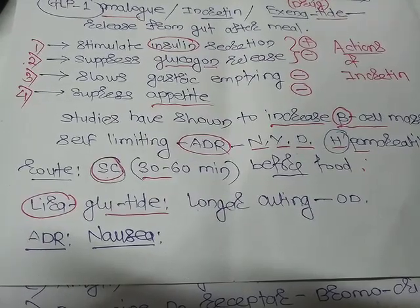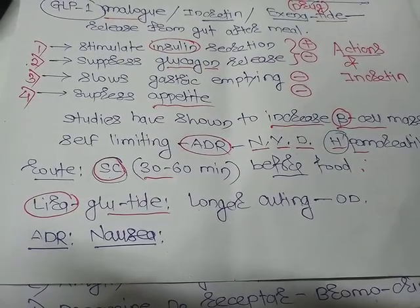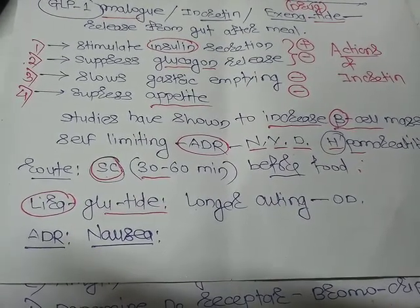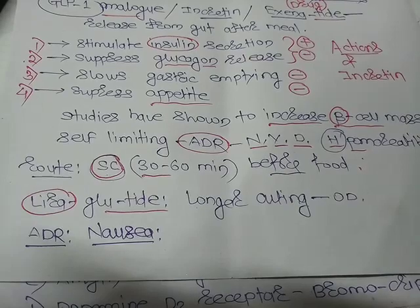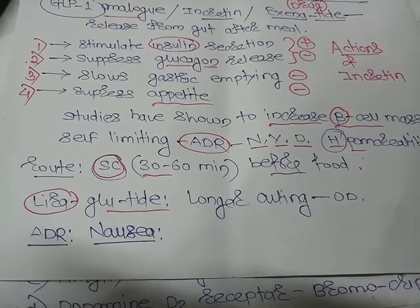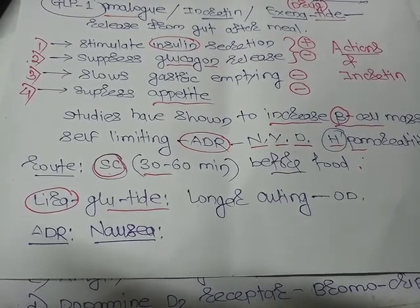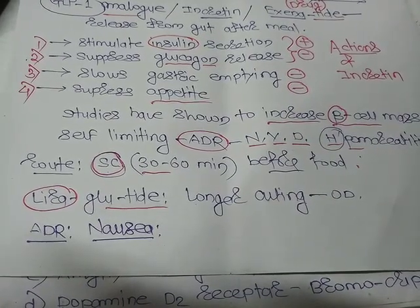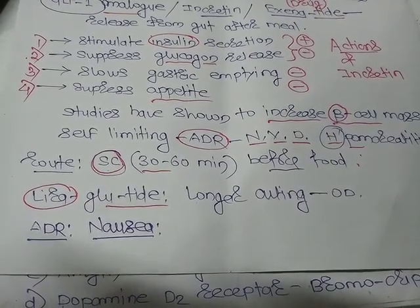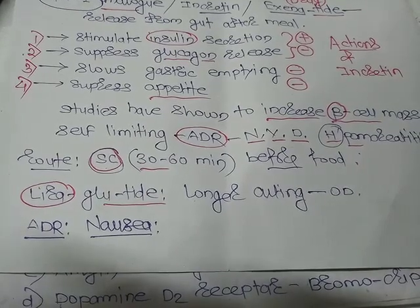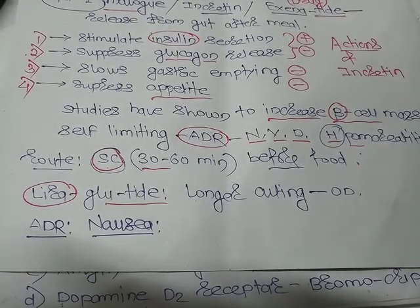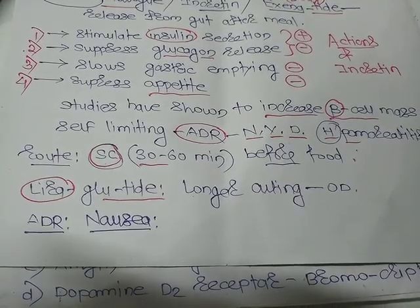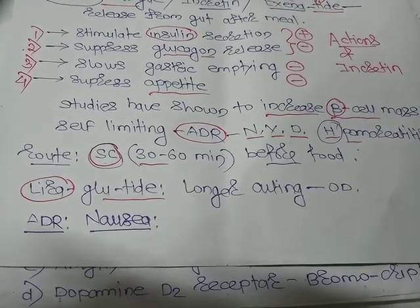The actions of incretin are: first, it stimulates insulin secretion — meaning it is an insulin secretagogue or it enhances insulin secretion. Second, it suppresses or inhibits glucagon release. Third, it delays or slows down gastric emptying. Fourth, it suppresses the appetite center.